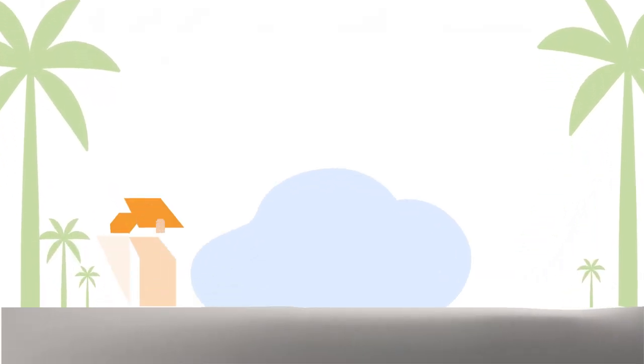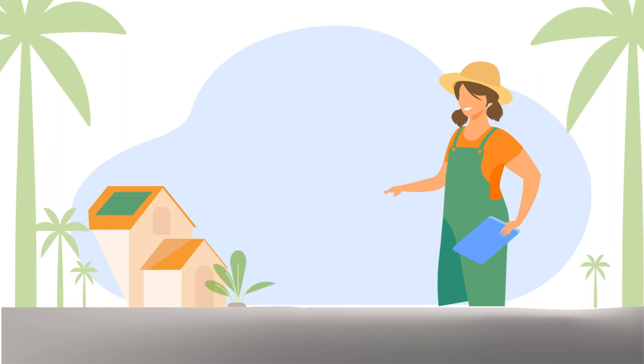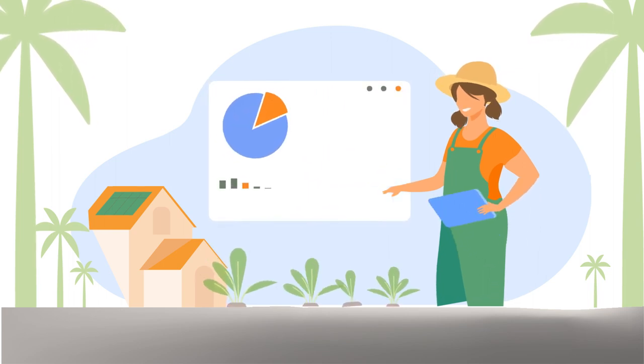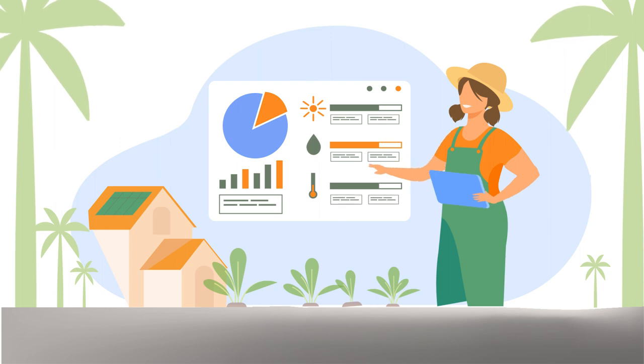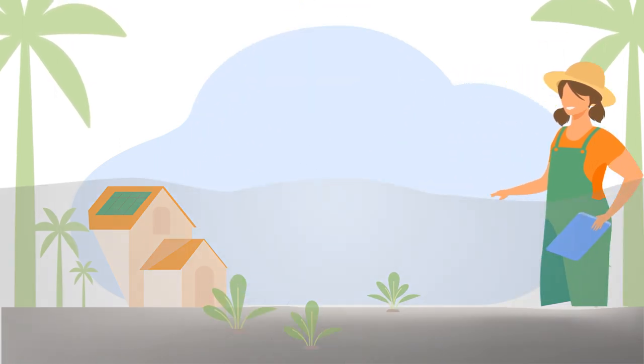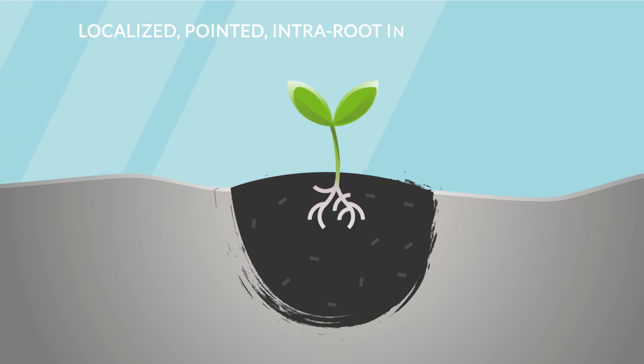Bio agro technology is a simple but effective solution for growing crops, increasing productivity, and ensuring sustainable development of the agro industry. The technology is made in the form of a localized pointed intra-root injection method of irrigation.